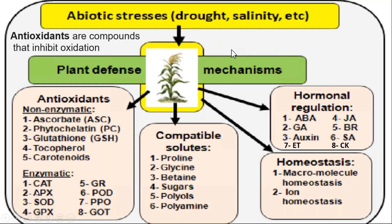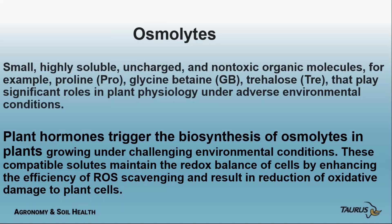We also have enzymatic antioxidants — catalase and superoxide dismutase. The plant also uses hormones to send messages: abscisic acid, gibberellins, auxin, ethylene, cytokinins, salicylic acid, jasmonic acid, and brassinosteroids — all responding to stress. Osmolytes are highly soluble, uncharged, and non-toxic organic molecules like proline and glycine betaine, and hormones are also used to trigger biosynthesis. Remember, the plant only has those five basic ingredients, and it has the genetics to synthesize all of these things.